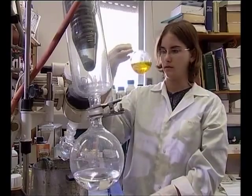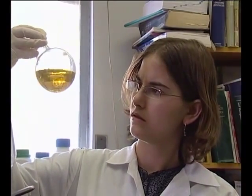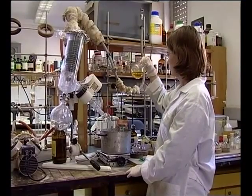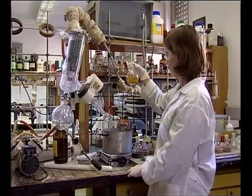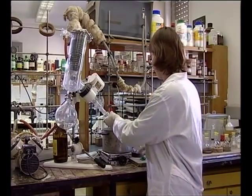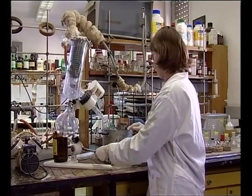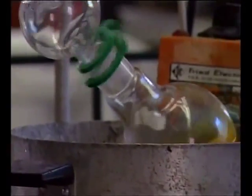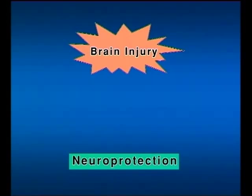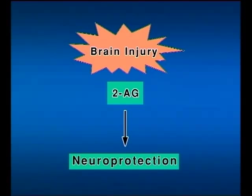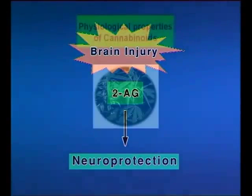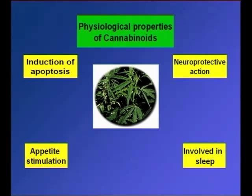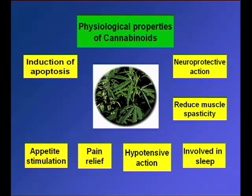Why do we have that system of receptor, endogenous cannabinoids — just in order to cause high? No. This is a very important physiological system which is involved in a large number of physiological and therapeutic reactions. For example, anandamide and 2-AG are involved in neuroprotection. When we have a brain trauma, the brain tries to reduce the damage by overproducing these compounds which lower the damage. They are also involved in anxiety, sleep, and essentially all physiological reactions that have been investigated.